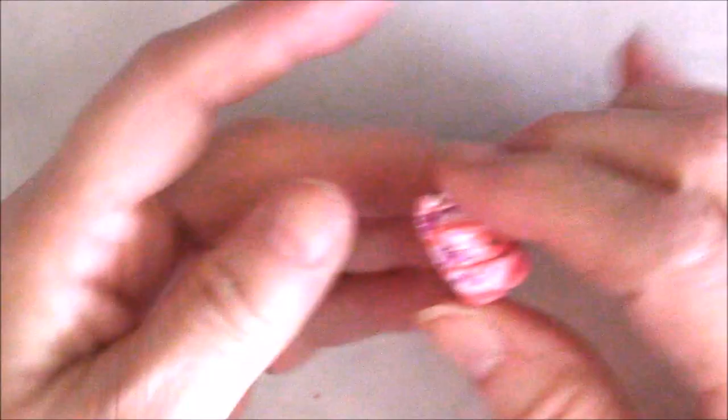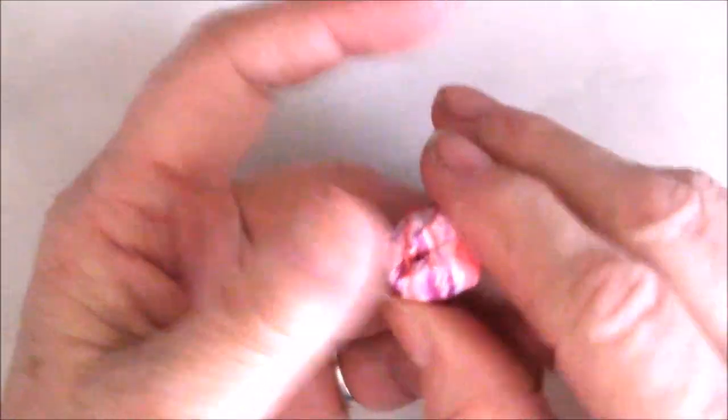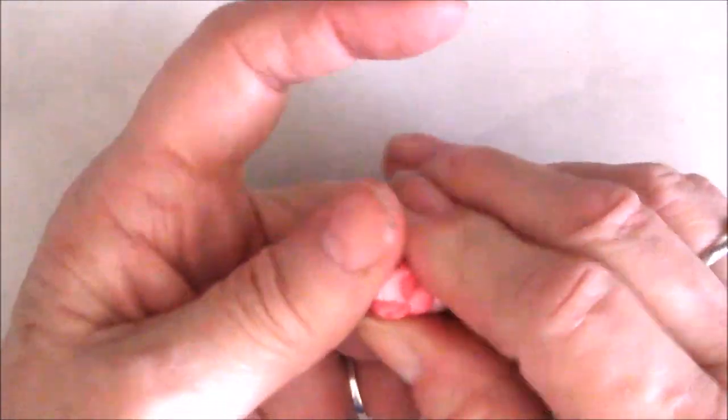I bent it that way because I want to get some of these interesting stripes on the top. I folded it so that I would have at least one side that has those swirls on it.